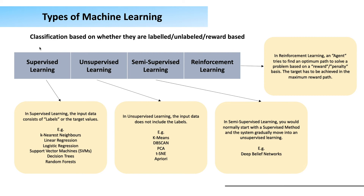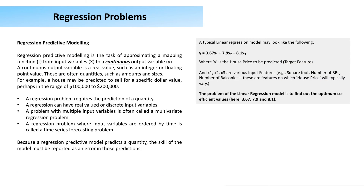Reinforcement learning is used in online games and self-driving cars. It uses an agent and a reward/penalty-based mechanism. The agent tries to find an optimum path to solve a problem — if it goes in the wrong direction, it gets a penalty; if it goes in the right direction, it gets a reward. By attempting over and over again, it finds the path which gives the lowest penalty or the highest reward.